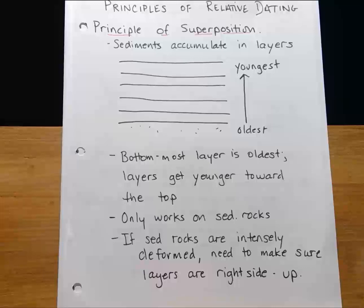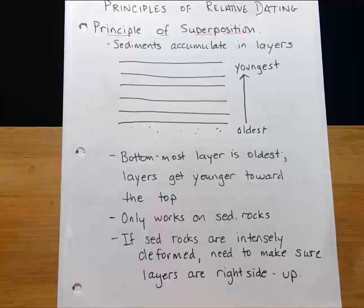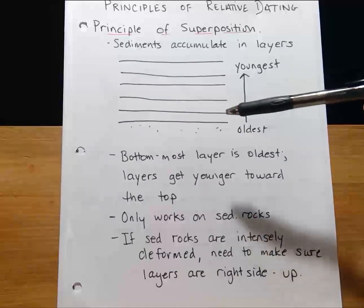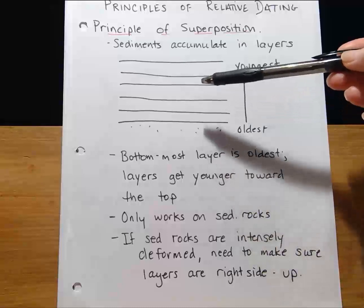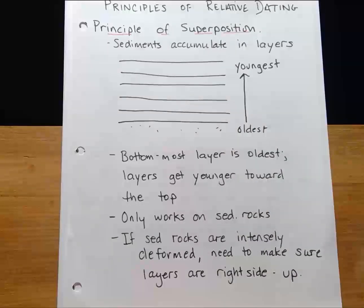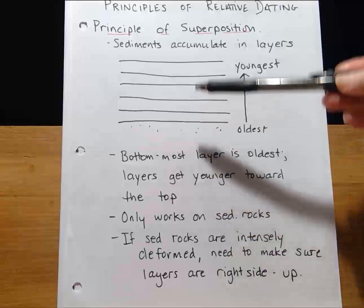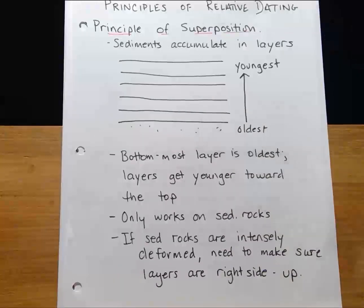The first part talked about relative dating, so I just want to review the most important of our relative dating principles. The first one is the principle of superposition, and remember we only apply that to sedimentary rocks. Sedimentary rocks accumulate in layers one above the other, so the oldest rock unit is on the bottom, and as we go toward the top the layers get younger and younger.